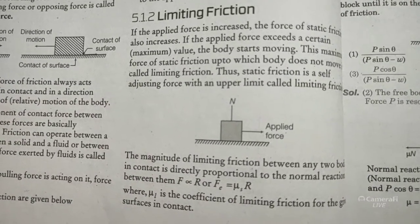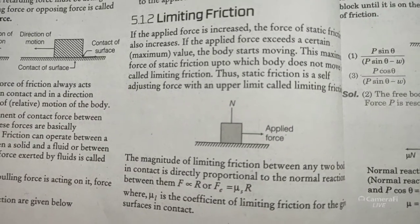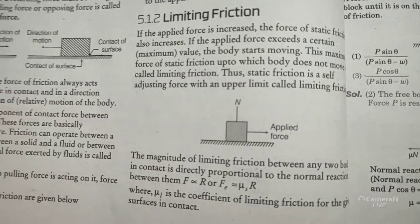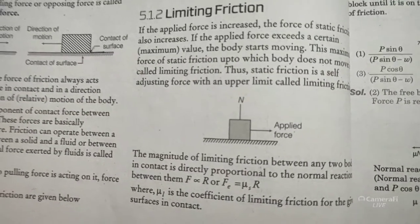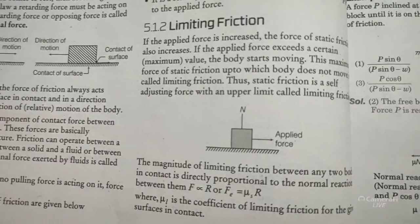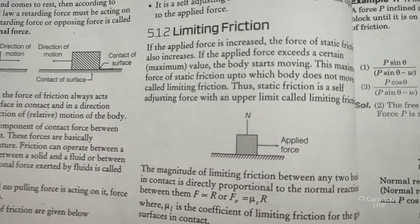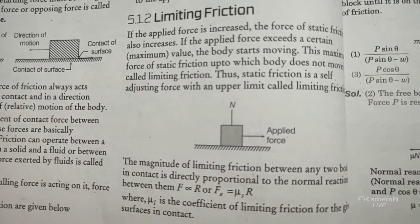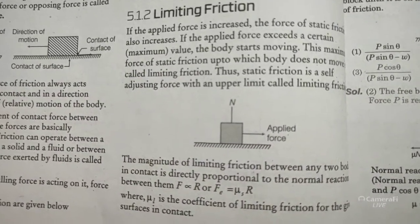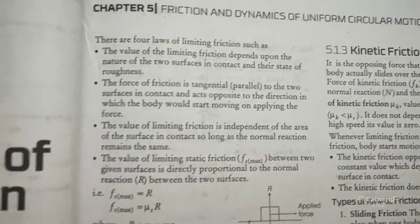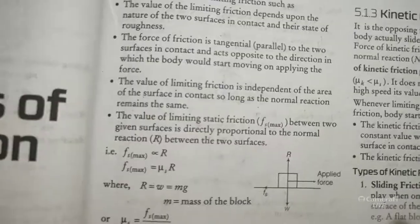Static friction has an upper limit called limiting friction. Limiting friction F is directly proportional to the normal reaction N. Removing the proportionality sign, we get F = μs × N, where μs is called the coefficient of limiting friction — the ratio of limiting friction to normal reaction.